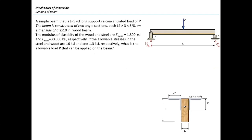There is a composite beam made of a wood block with dimensions B and H, strengthened by adding two steel L-shapes on the sides. The L-shapes are a standard steel shape of 4 by 3 by 5/8 inch. The beam has a length of 5 yards with a force acting at the middle. The modulus of elasticity of wood and steel are 1,800 ksi and 30,000 ksi. The allowable stresses in steel and wood are 16 ksi and 1.3 ksi. We want to find the maximum load that can be applied.